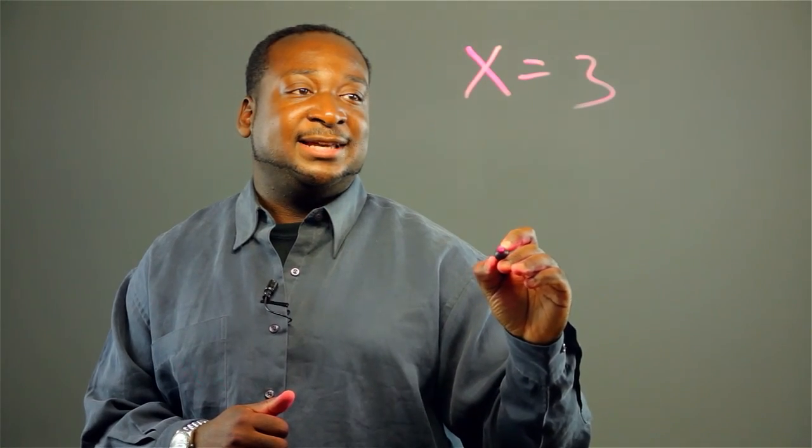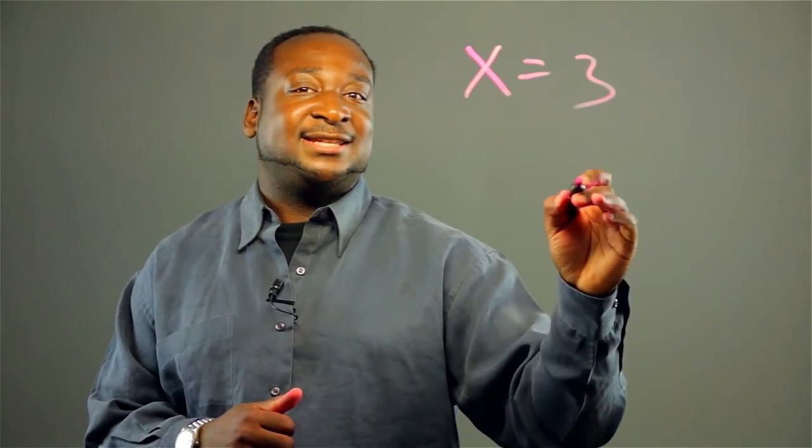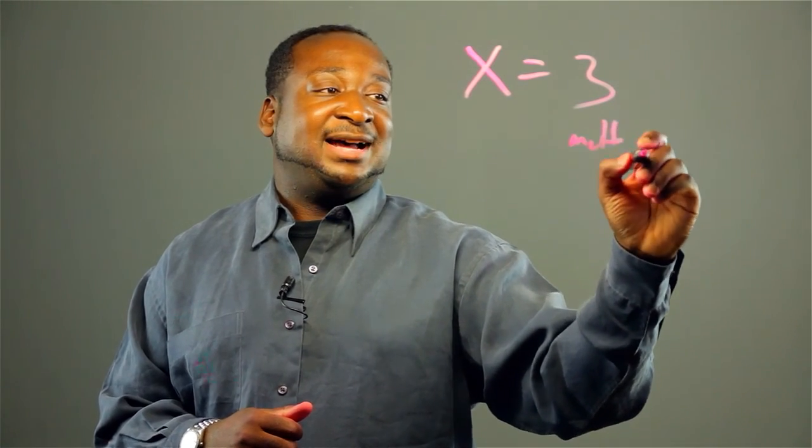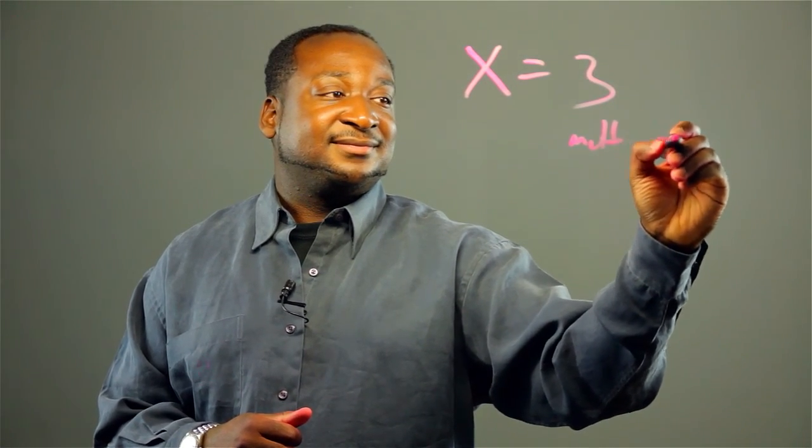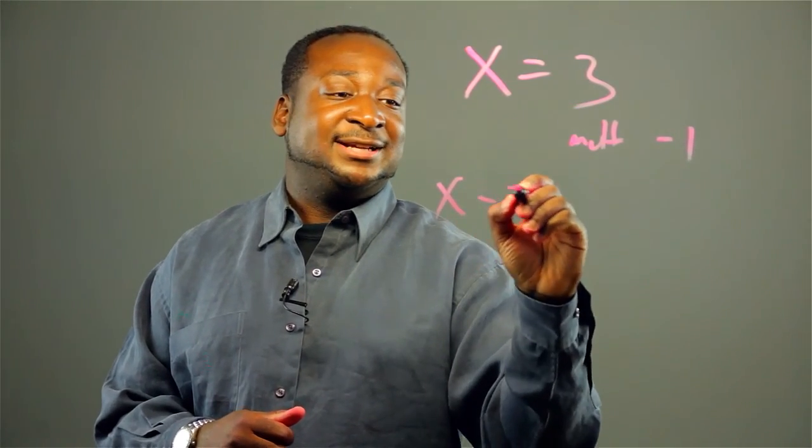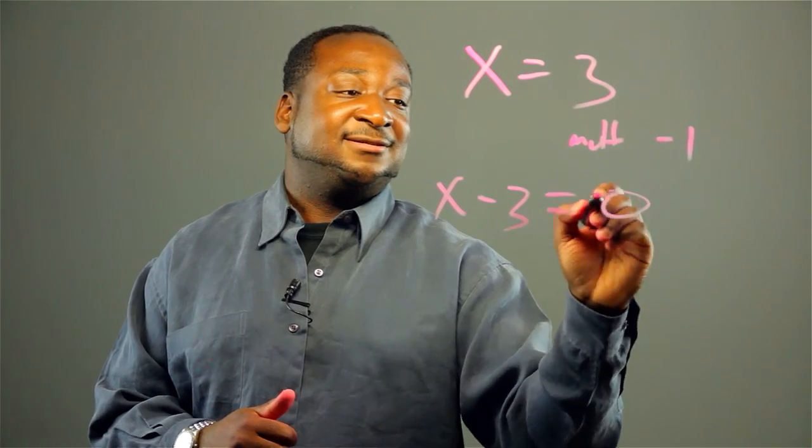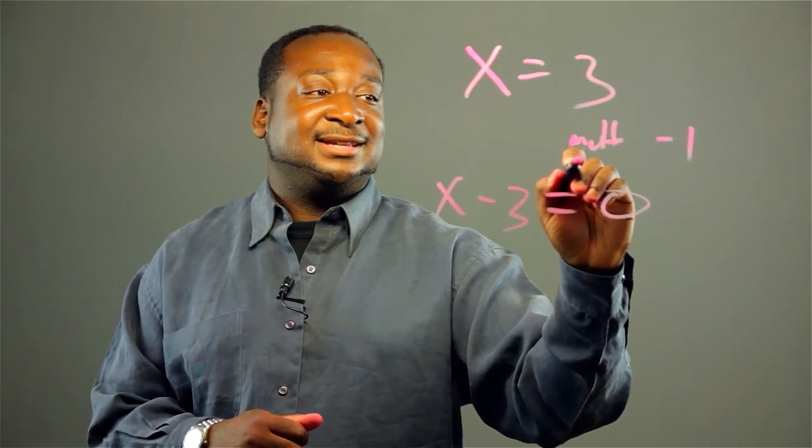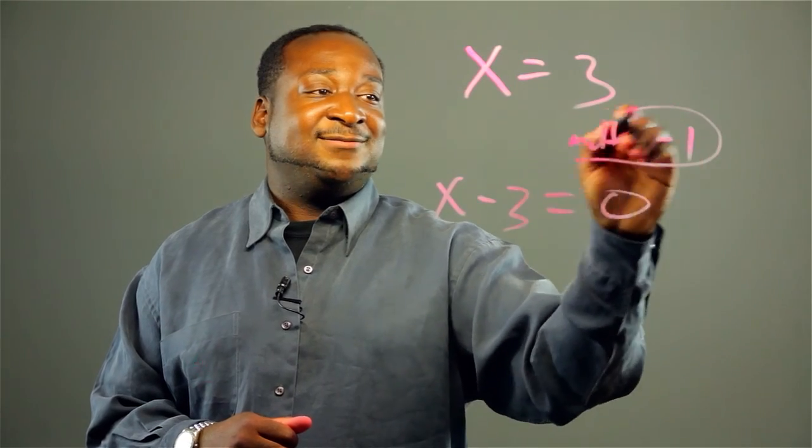Some people would just give an algorithm. They'll say when you're moving it over, just multiply by negative 1. So that's X, moving that over, minus 3 equals 0. And that's an algorithmic way to do it.